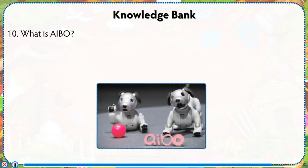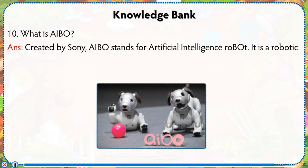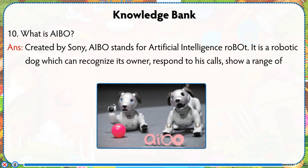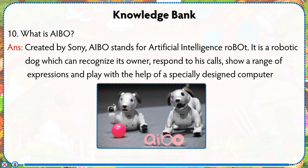What is Aibo? Created by Sony, Aibo stands for Artificial Intelligence Robot. It is a robotic dog which can recognize its owner, respond to his calls, show a range of expressions, and play with the help of a specially designed computer software.